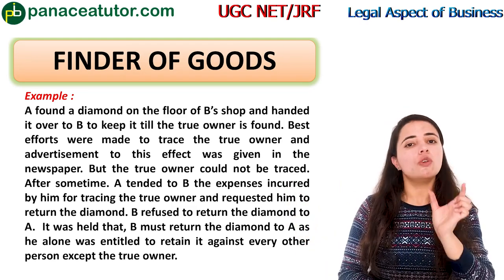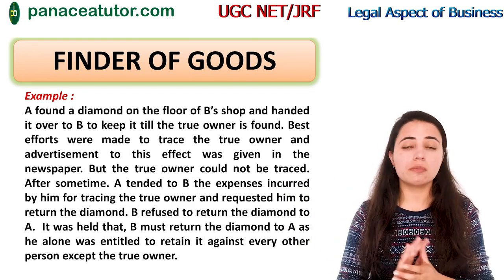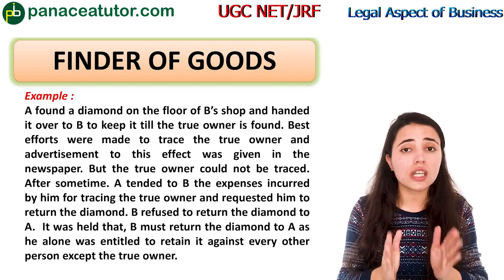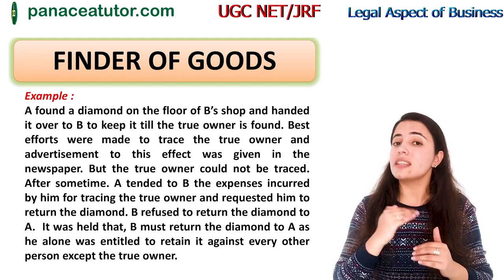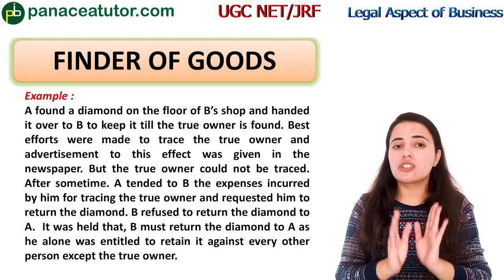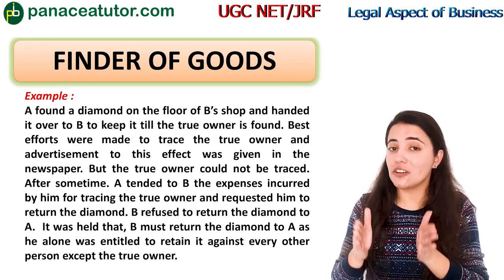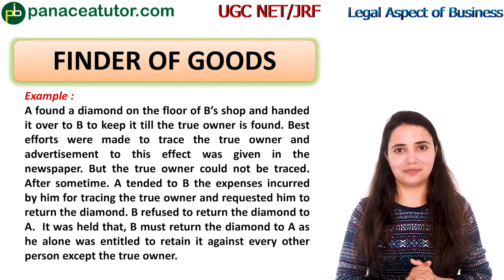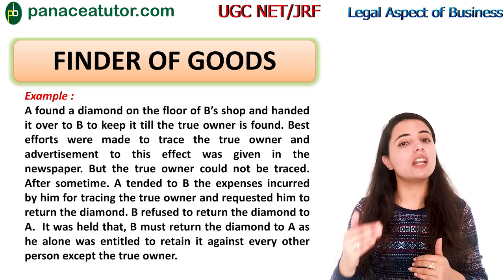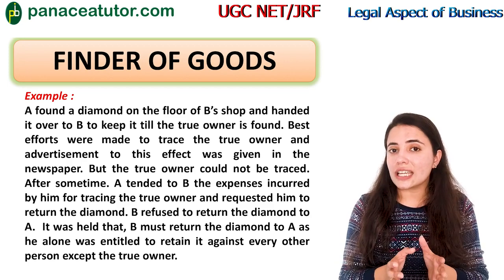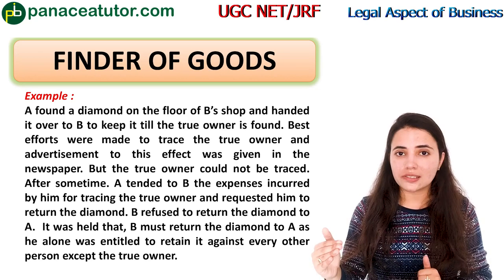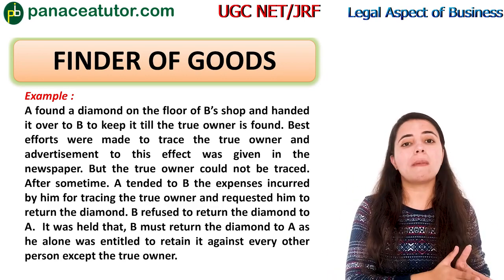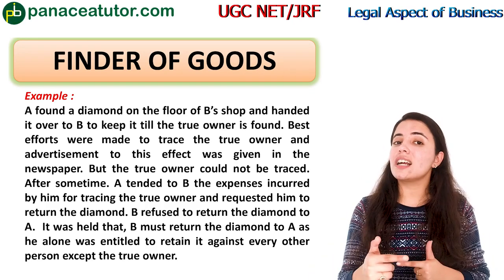A made 100% efforts — he advertised and tried to find the real owner, but no real owner was found. The law says that if someone makes 100% efforts to find the real owner of goods and still cannot find the owner, then the goods belong to the finder. So A will get the diamond. But when A went back to B, B refused to return it. In this case, the law creates an obligation on B to return the diamond to A because A is the finder of the goods — and this is a quasi-contract.